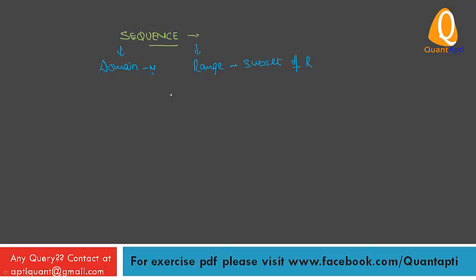One way to express a real sequence is to list its first few terms till the rule for writing down other terms, like this: 1, 3, 5 is a sequence whose Nth term is given by 2N-1. So we can say Nth term AN equals 2N-1.